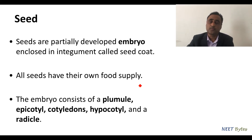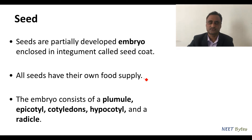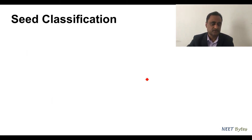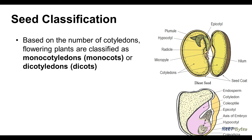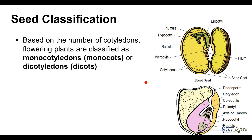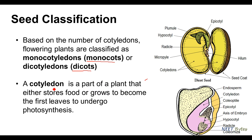Now let us talk about the classification of seeds. Majorly, two types of seeds have been recognized based on the number of cotyledons. When the number of cotyledons is one, we call them monocot, and if it is two, we call them dicot. The cotyledon is a part of the plant that either stores food or eventually grows to become the first leaves which undergo photosynthesis.